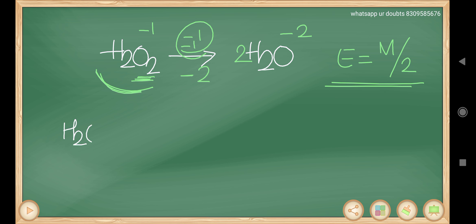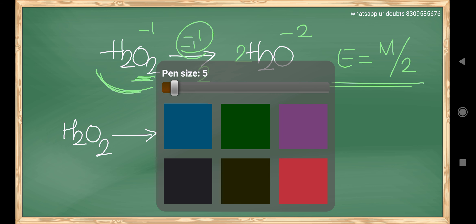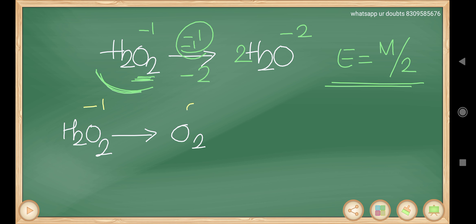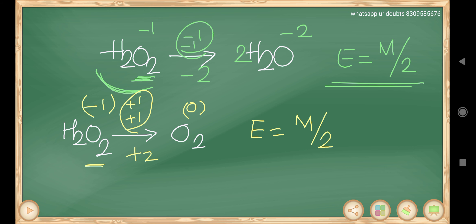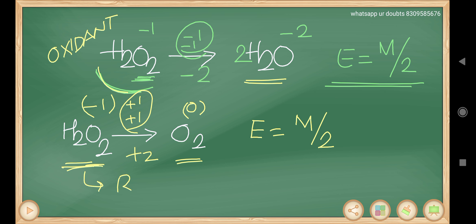If H₂O₂ changes to O₂ instead, the oxidation state goes from −1 to 0, a change of +1 for each oxygen. With 2 oxygens, the total change is +2, so equivalent mass = M/2 in this case also. When H₂O₂ changes to H₂O it is an oxidizing agent (reduction); when it changes to O₂ it is a reducing agent (oxidation). Either way, the equivalent mass is molecular mass divided by 2.